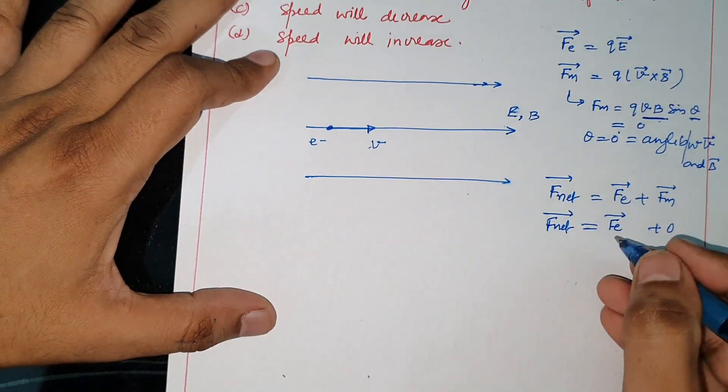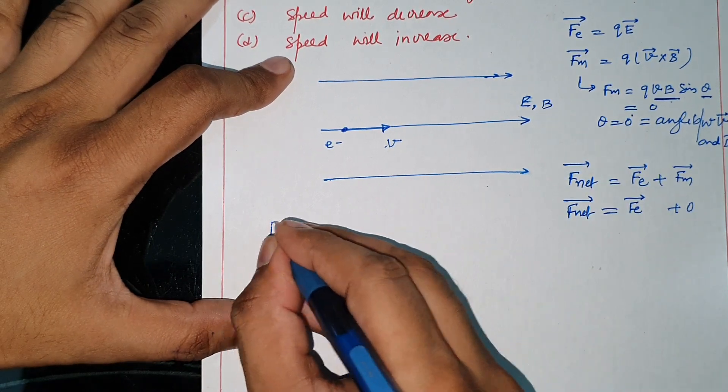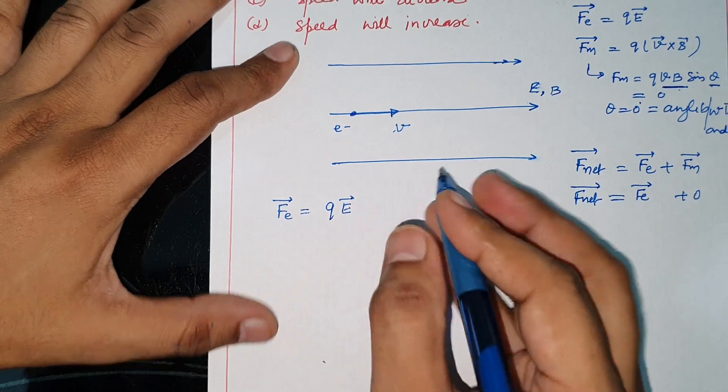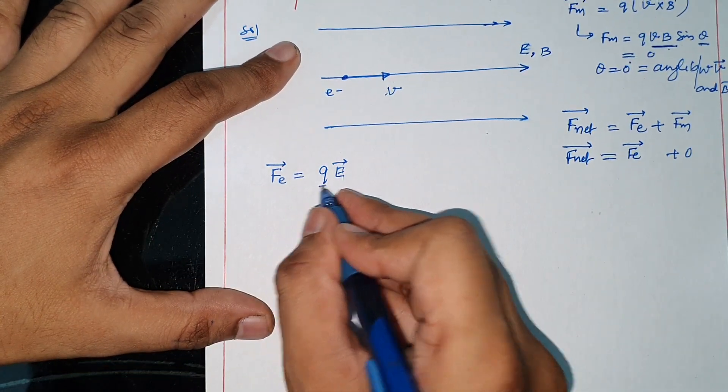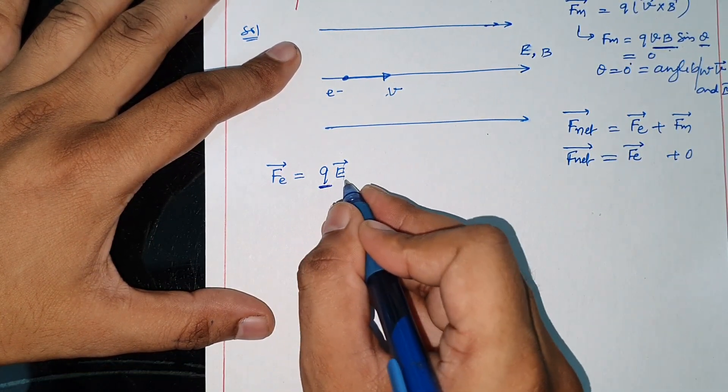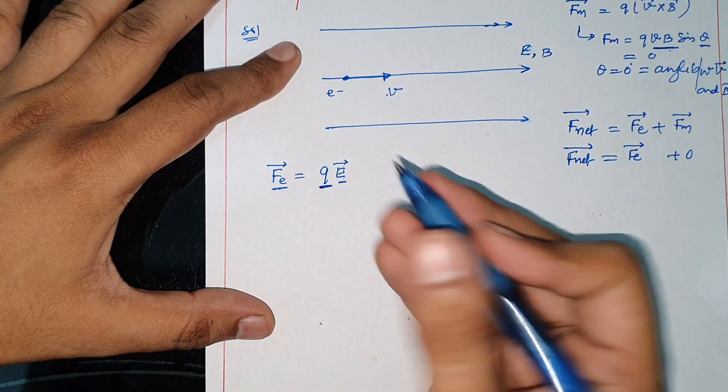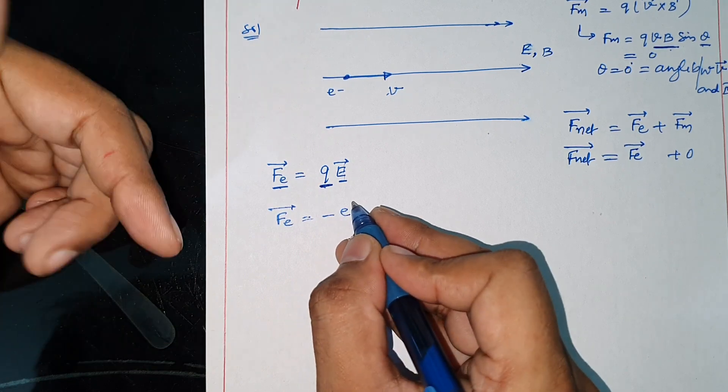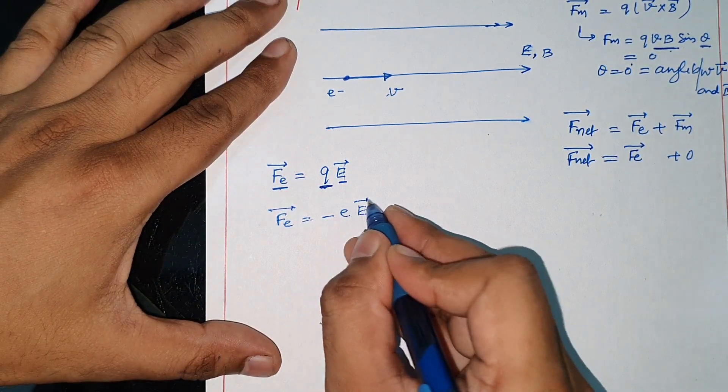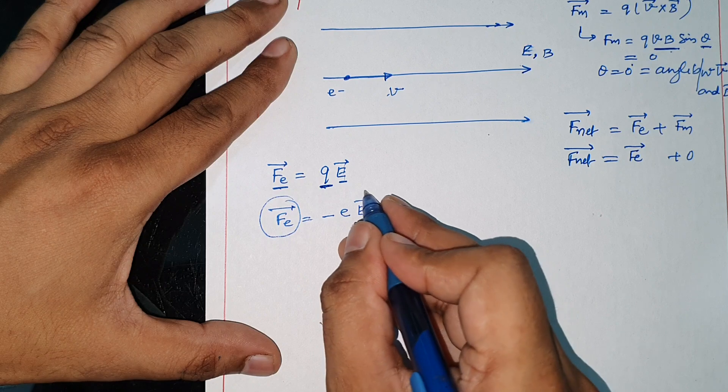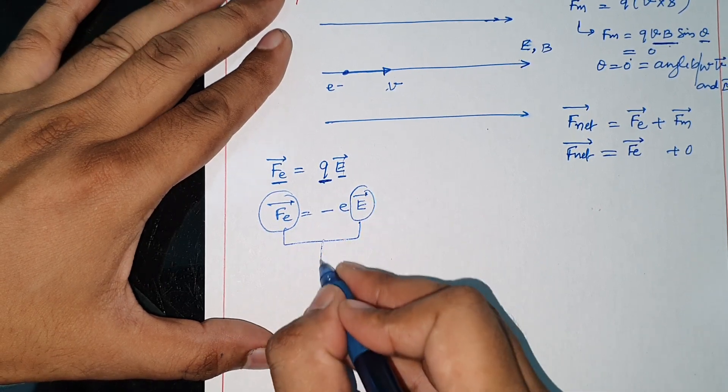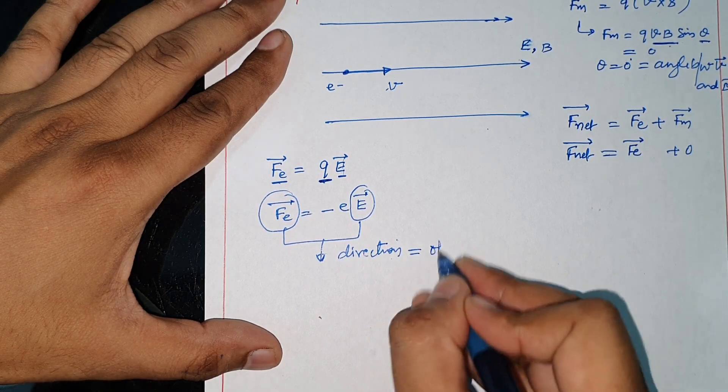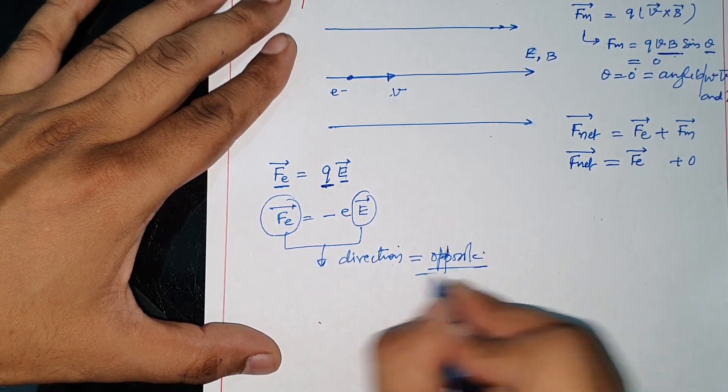Then the electric force, F_e vector equals qE vector. The q value here is the electron charge. If q is negative, then F_e vector equals -eE vector. The minus sign indicates that this vector and this vector are in opposite directions. That means electrostatic force is opposite to the electric field direction.